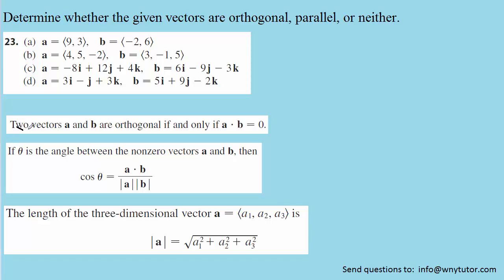We know that two vectors a and b will be orthogonal, which means they're perpendicular, if and only if the dot product between those two vectors is equal to 0. On the other hand, if we're trying to determine if the vectors are parallel, we can take advantage of the definition of the dot product — finding the dot product divided by the product of the magnitudes of the vectors — and then determine the angle between them. If that angle turns out to be either 0 degrees or 180 degrees,